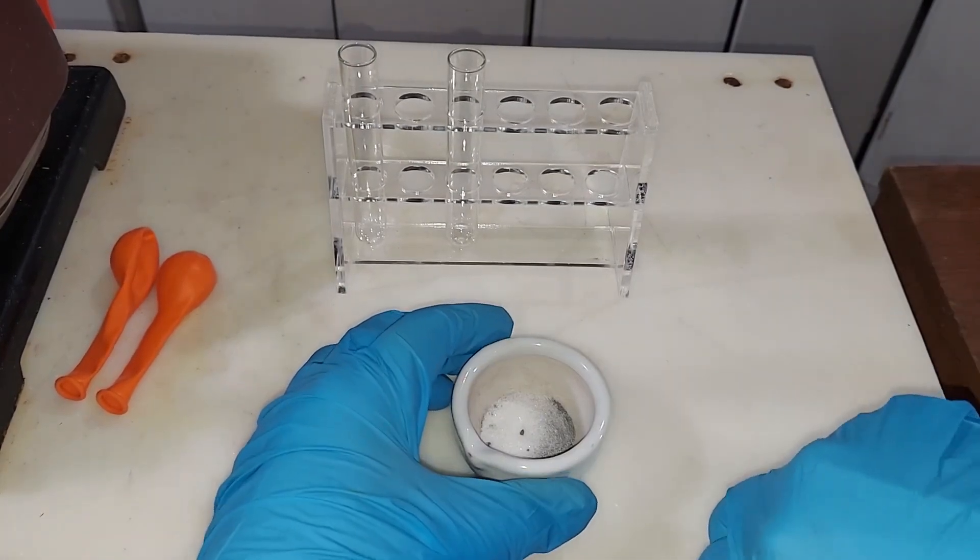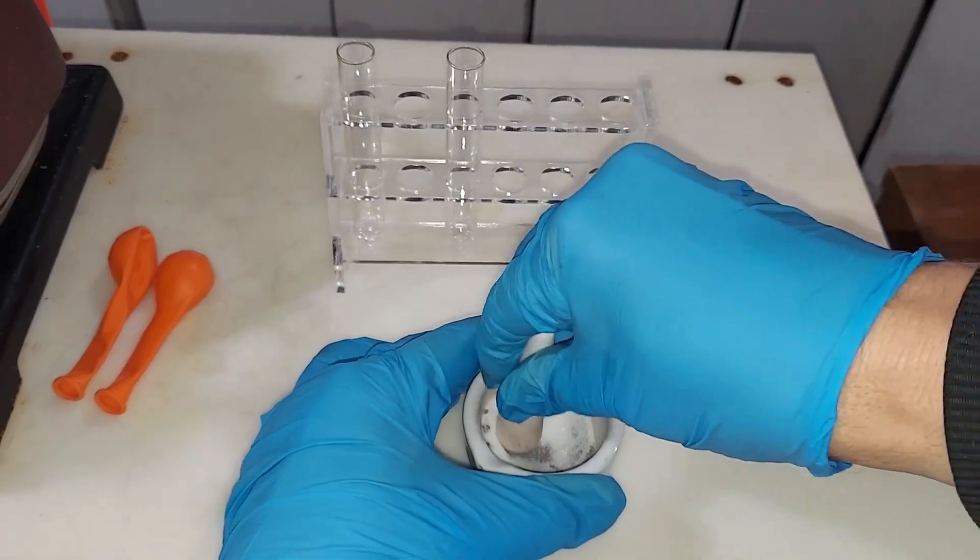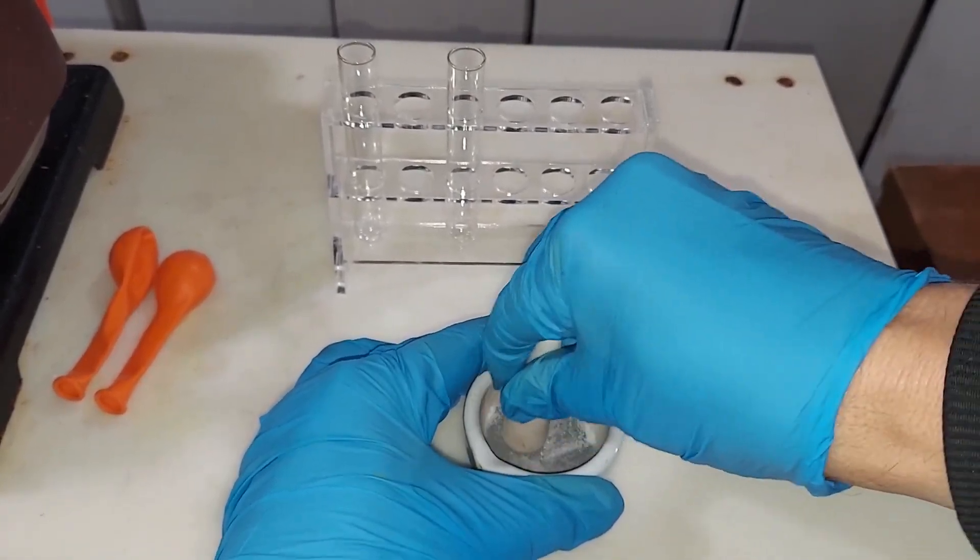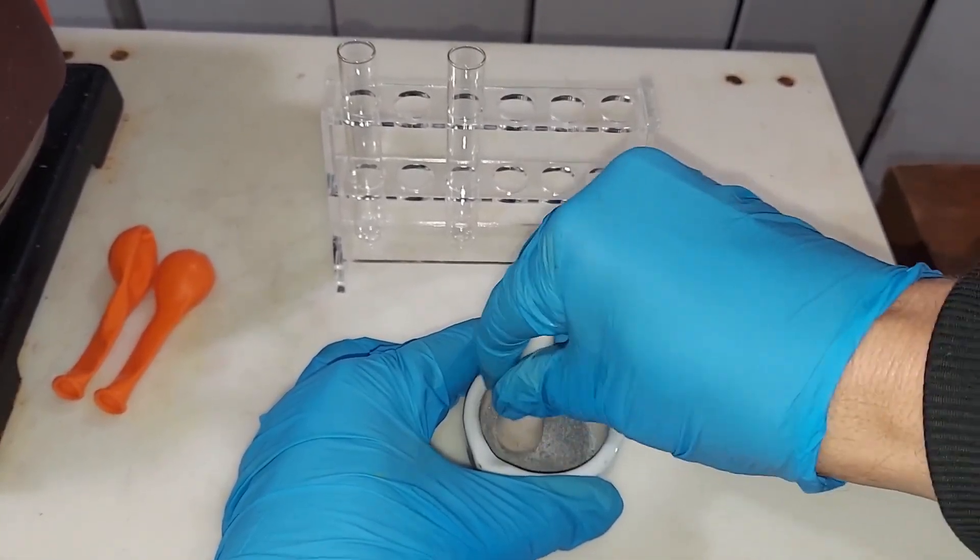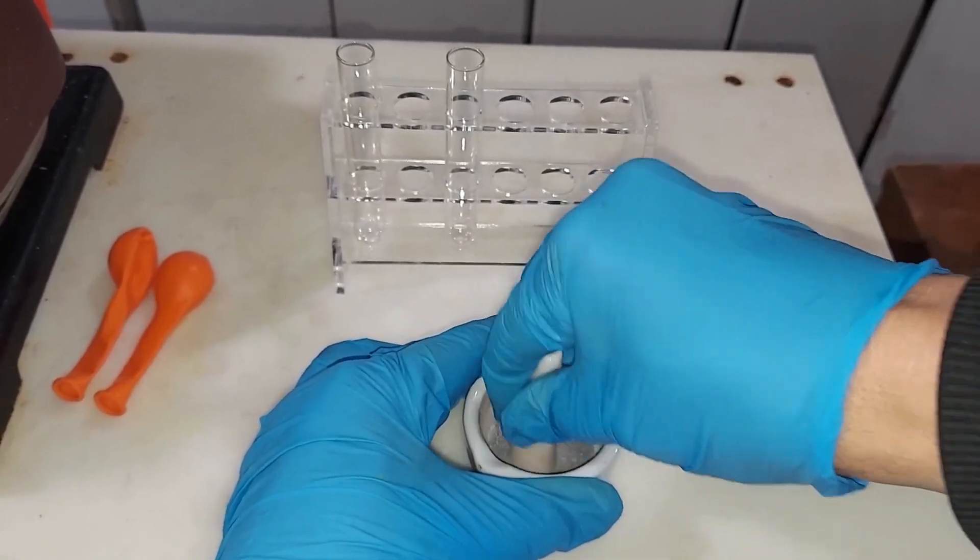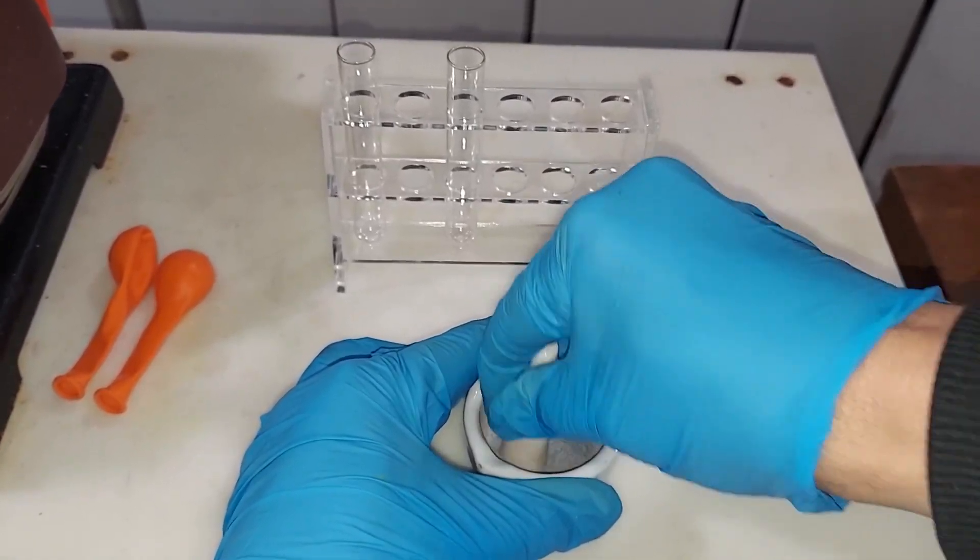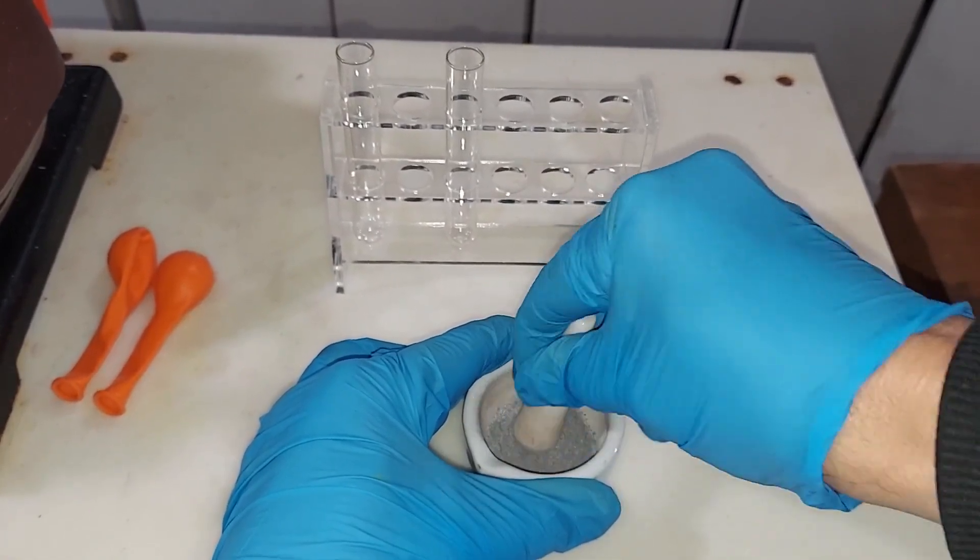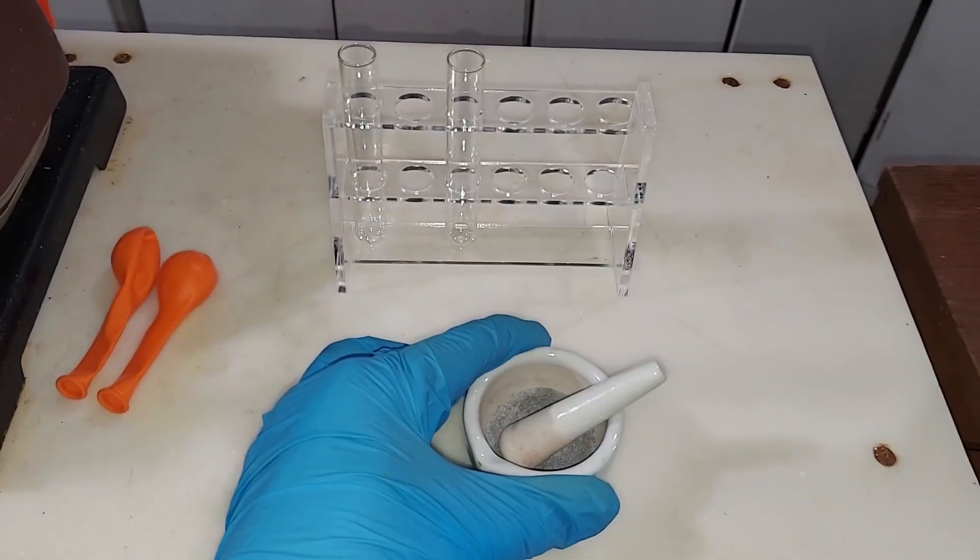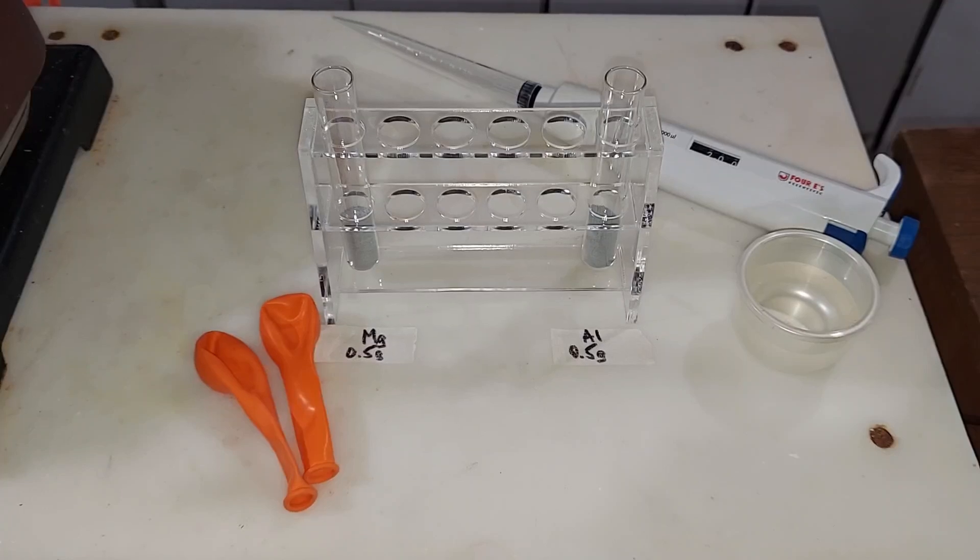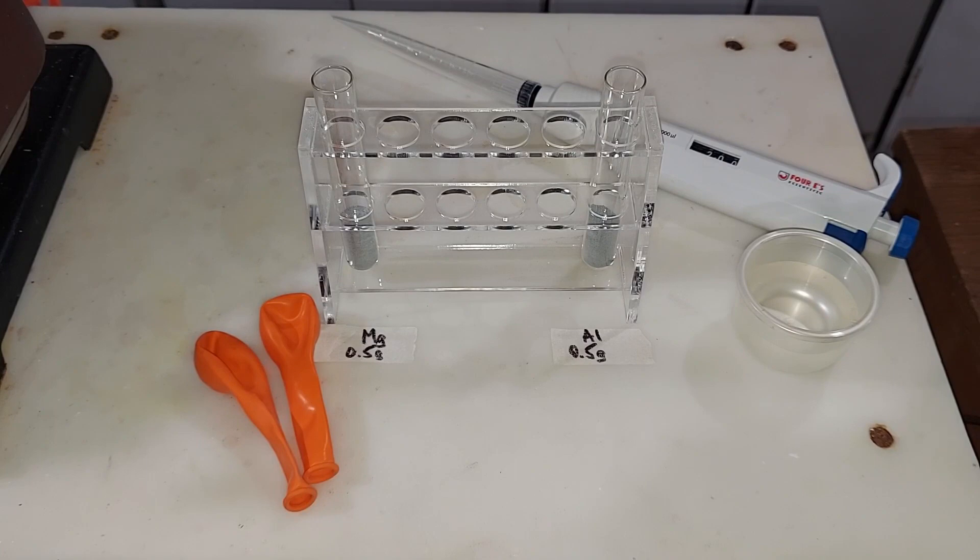I've mixed the citric acid and magnesium here. I'm going to grind them together good before putting them in the test tube. This might be too much powder, so I'll break it into halves for both. Obviously the magnesium is on the left and aluminum on the right, and both have citric acid. I'm going to add two cc's, two milliliters of water to each.